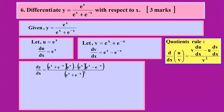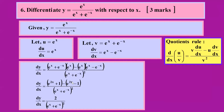Divided by v squared, where v = e^x + e^(-x). Then I simplify by multiplying out the exponents, check what cancels, and arrive at the final answer. One mark for writing u and v, one mark for applying the quotient rule correctly, and one mark for simplifying — that's three marks total.